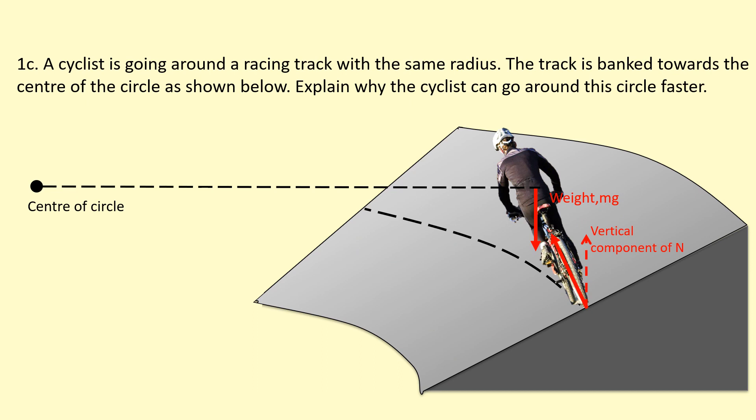What's providing centripetal force is going to be the horizontal component of the normal reaction force here, acting towards the left, towards the center of the circle. We need a centripetal force, which is mv squared over r. And if we're going around faster, that means you need a larger centripetal force.